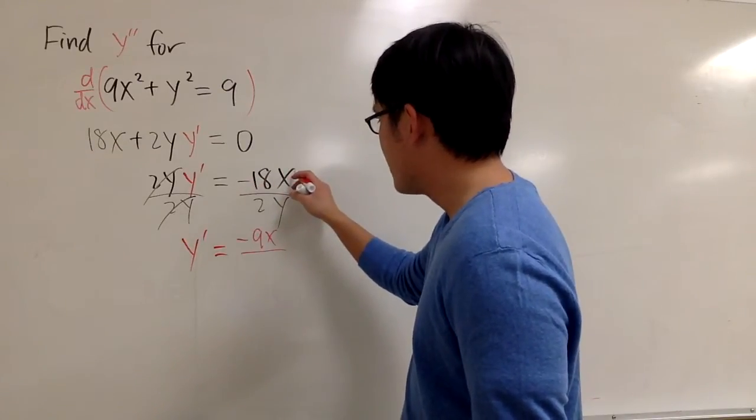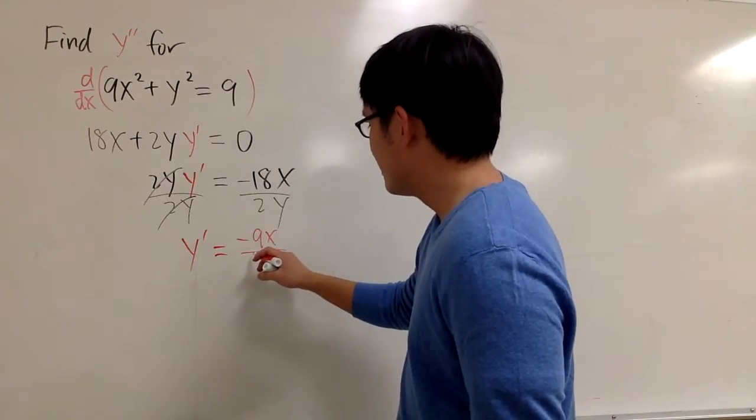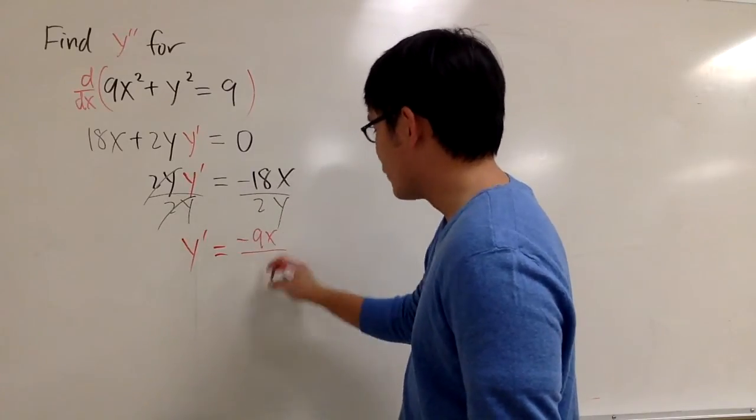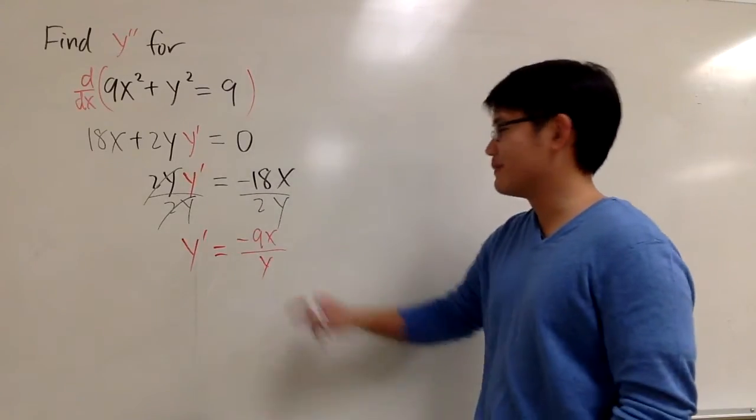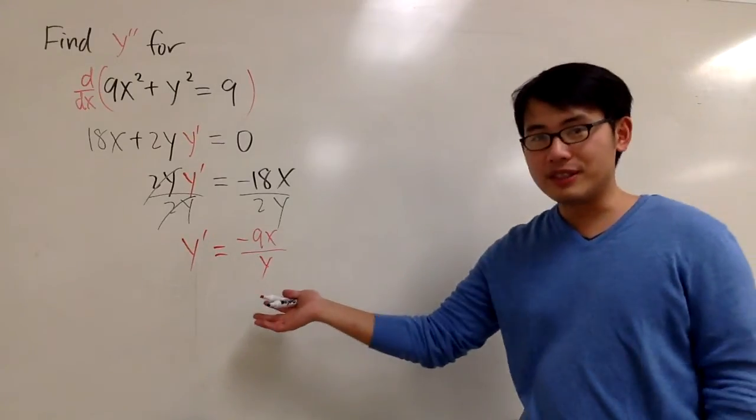So negative 9 on the top, over negative 9x on the top, over y on the bottom. Just like that. This is my first derivative.